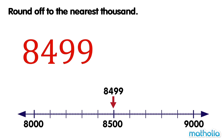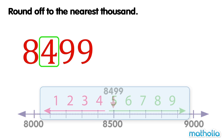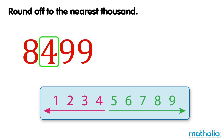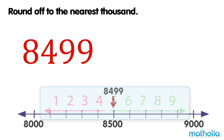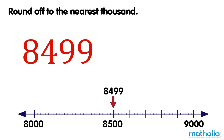When rounding to the nearest thousand, we look at the digit in the hundreds place. The digit in the hundreds place is 4. Digits that are 4 or less are rounded down. So 8,499 is rounded down to 8,000.